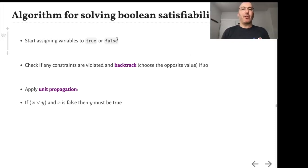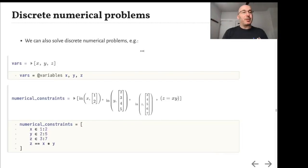What is the algorithm for solving boolean satisfiability problems? You start assigning variables to either true or false basically at random, and each time you assign a variable you check if it violates any of the constraints and if it does you backtrack. You undo that choice of variable and choose the opposite one. Then there's a very important tool called unit propagation that says if you have a clause with two variables x or y and you know that x is false then you know that y must be true, and that enables you to reduce a lot the search space where you're looking.